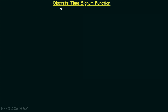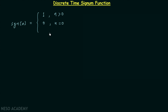Let's have a discussion on the discrete time signum function. The discrete time signum function is represented by sgn[n] and it is equal to 1 when n is greater than 0, meaning n is positive. It is equal to 0 when n is equal to 0, and equal to minus 1 when n is less than 0, meaning n is negative.